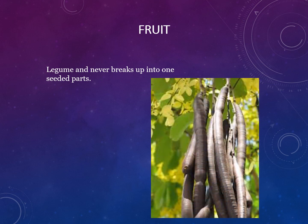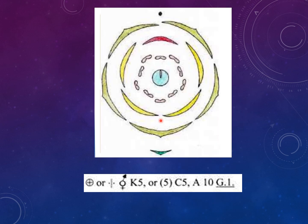Fruit is a legume and breaks up into one-seeded parts. These are the case of Cassia fistula — a lomentum-type fruit. Five sepals and five petals with unequal stamens and monocarpellary gynoecium.